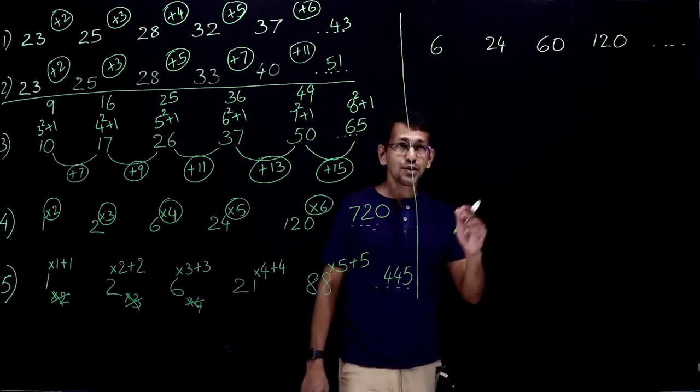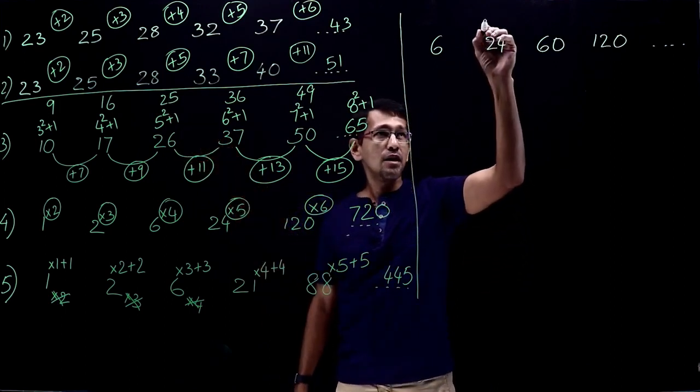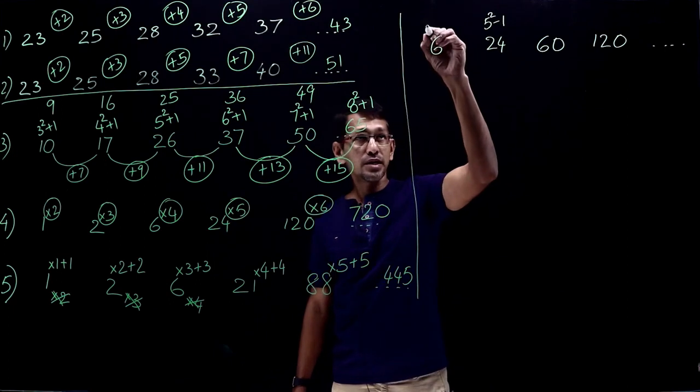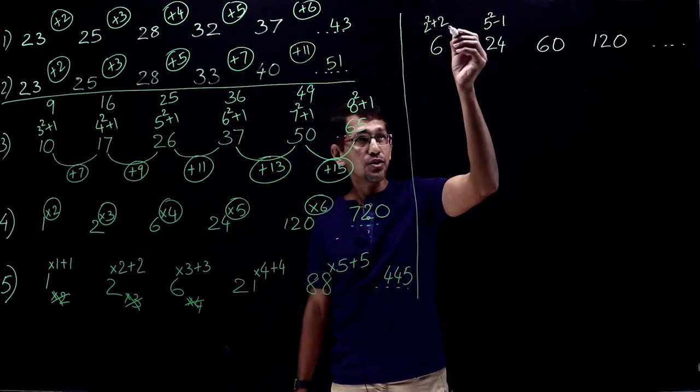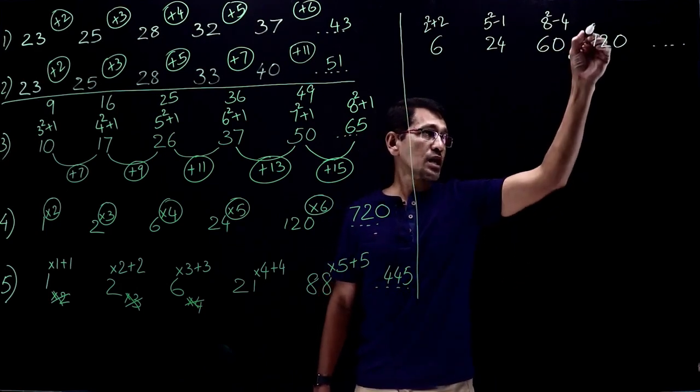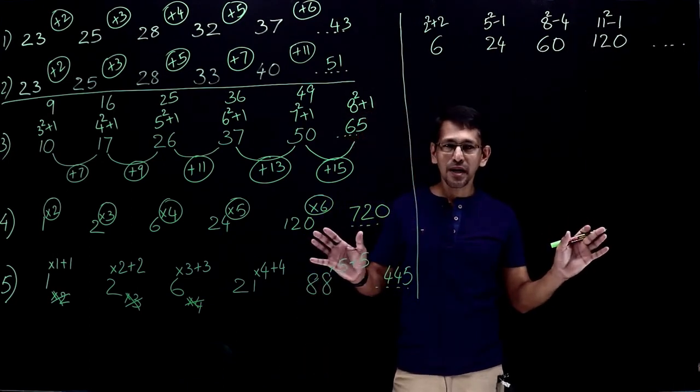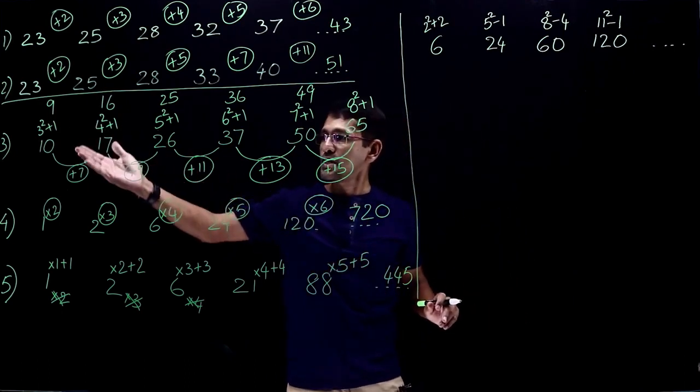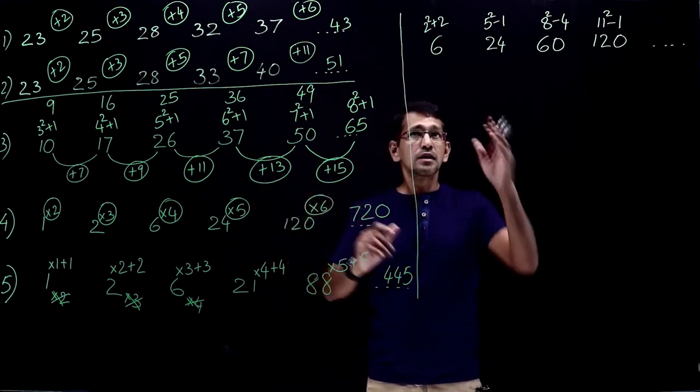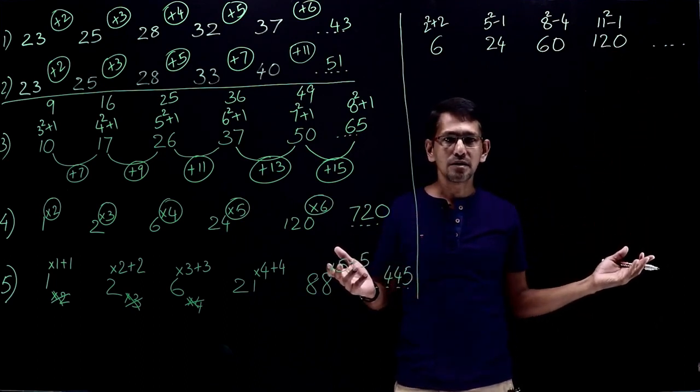Naturally, when we see this 24, you see 25 is 5 square. So what comes to our mind is 5 square minus 1. In that case, 6 is what? Near a square is 2 square, 2 square plus 2, or it could be 3 square minus 3. And 60 is 8 square minus 4, and 120 is 11 square minus 1. However, does it give us any kind of pattern? I don't see any pattern right here.